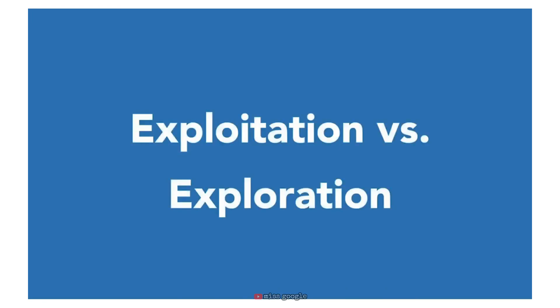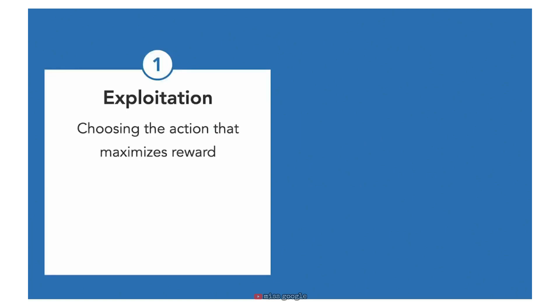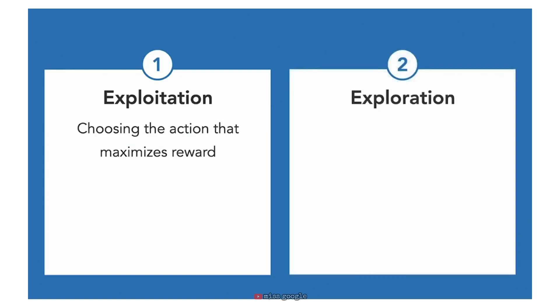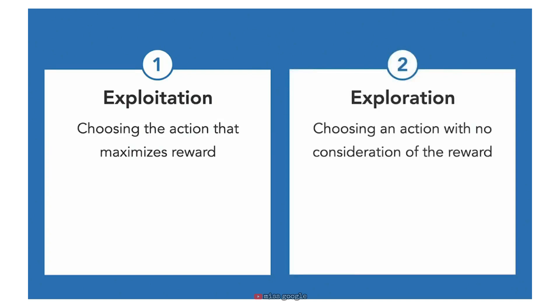This brings up an important challenge known as the exploration versus exploitation trade-off. If left unchecked, an agent will always prefer actions it has tried in the past and found effective — this is exploitation. However, to discover new sequences of actions with potentially higher reward, the agent must try actions not selected before — this is exploration. An agent that focuses only on exploitation can only solve problems it has previously encountered; an agent that focuses only on exploration will not learn from prior experience. A balanced approach is needed for effective reinforcement learning.